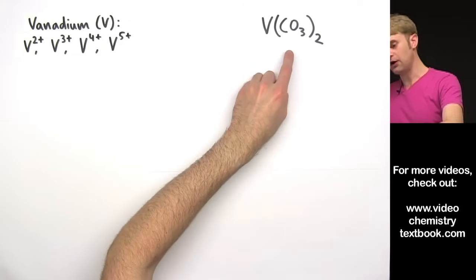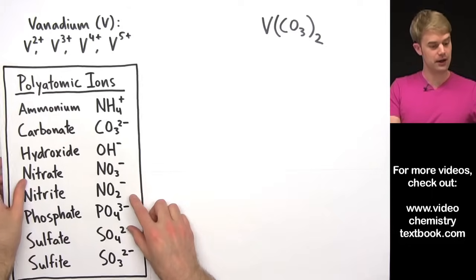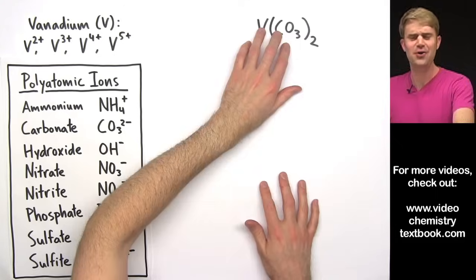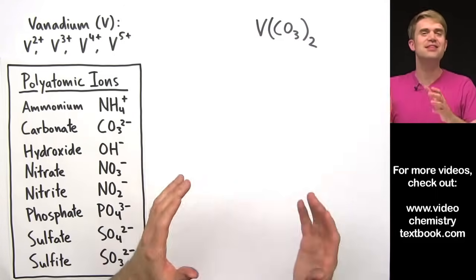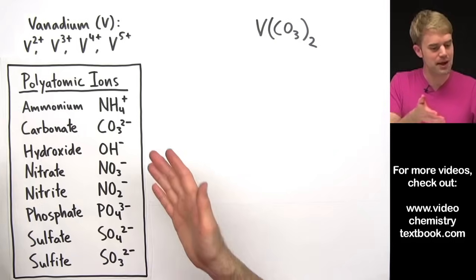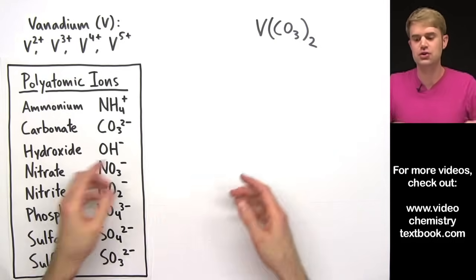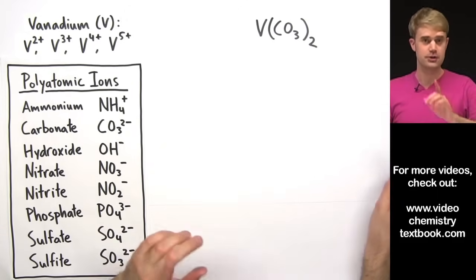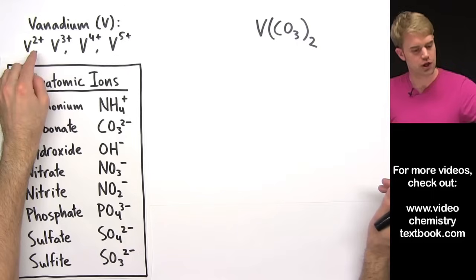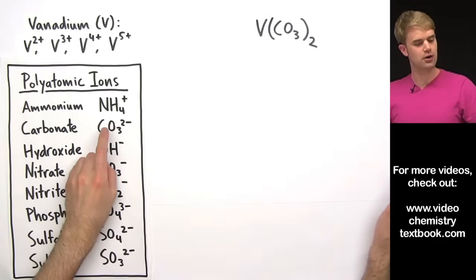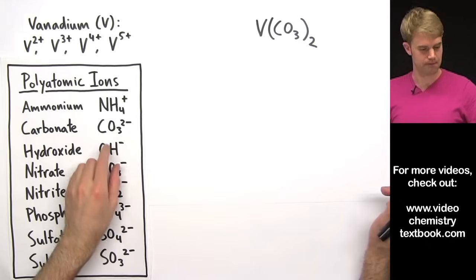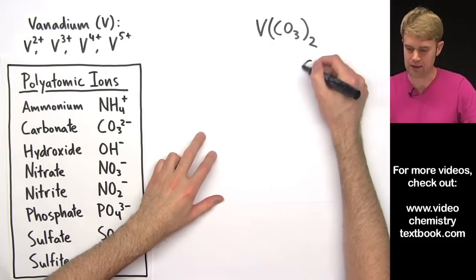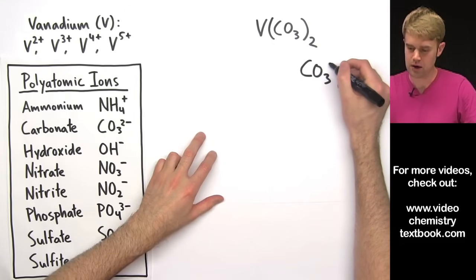Now the CO3 here is a polyatomic ion. It's the polyatomic ion carbonate. So, how did I know that? Well, obviously I wrote the question. But this is a good example of when it makes sense for you to learn the polyatomic ions so that if you see them in a problem like this, you can just recognize them right away. So to figure out the charge on vanadium, we need to focus in first on carbonate, our negative ion. So carbonate, CO3, has a charge of 2-, okay, CO3 2-.